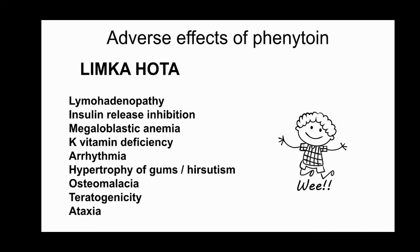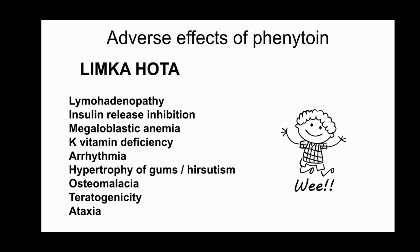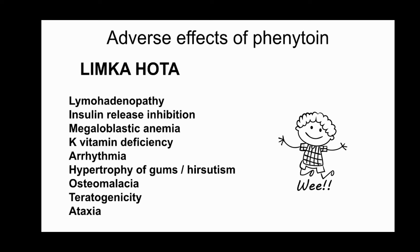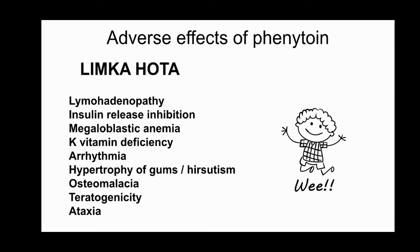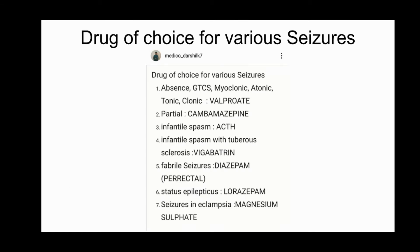The main focus of this video is the adverse effects of phenytoin. The adverse effects occur in two ways: one from prolonged use, and one at toxic levels of phenytoin. The mnemonic is LIMKAHOTE: L - lymphadenopathy, I - insulin release inhibition, M - megaloblastic anemia, K - K-vitamin deficiency, A - arrhythmia, H - hypertrophy of gums (most important), another H - hirsutism, O - osteomalacia, T - teratogenicity, A - ataxia.